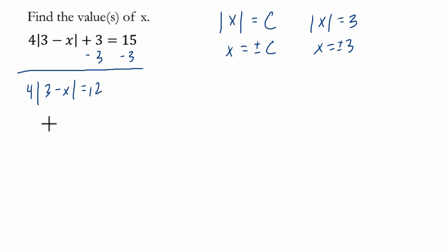That's 12 divided by 4 on both sides. And we have the absolute value of 3 minus x equals 3. So this tells me the absolute value of 3 minus x equals 3.